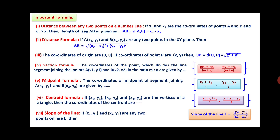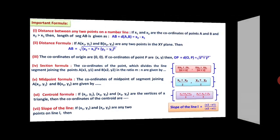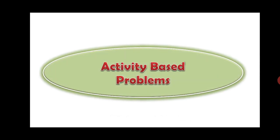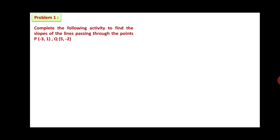Based on these formulas, let us discuss a few problems. Activity-based problem — this is for 2 marks. Complete the following activity to find the slope of the line passing through the points P(3, 1) and B(5, 3).